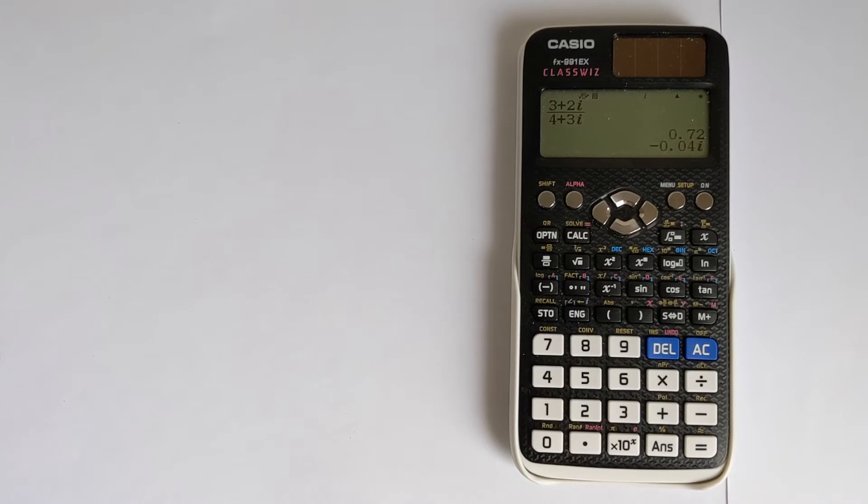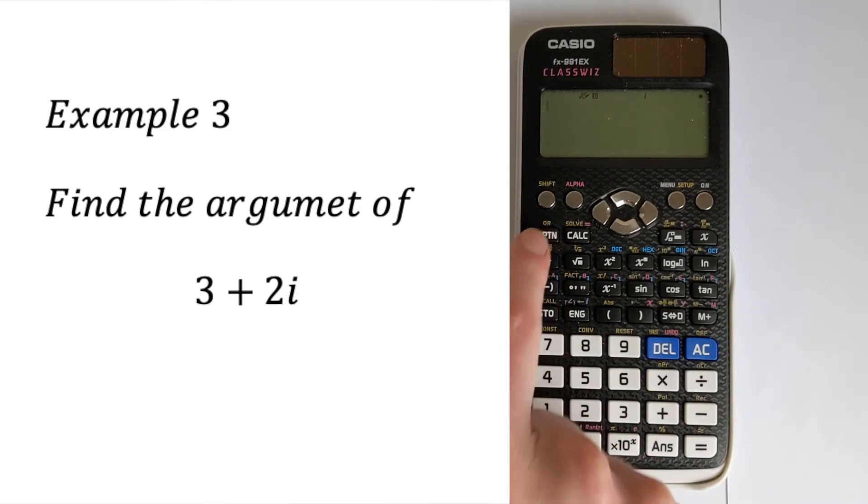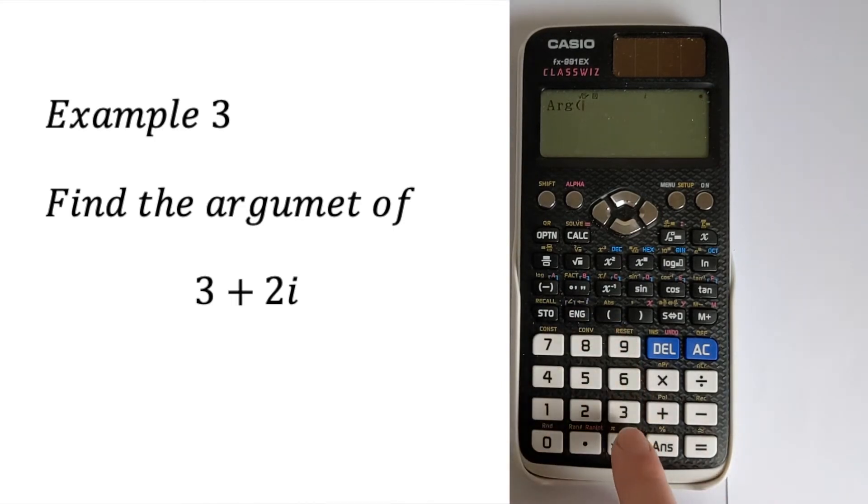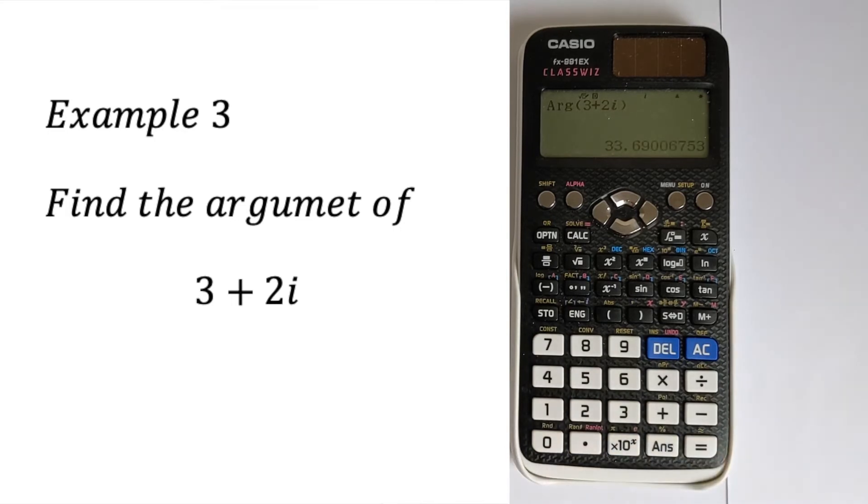Some other useful things you can do: you can find the argument of a complex number. Say we wanted to find the argument of 3 plus 2i. Select the option menu, and then on option 1, we have argument. Do 3 plus 2i, then equals, and it will find the argument for you.